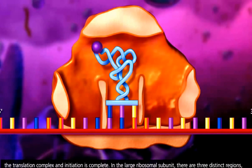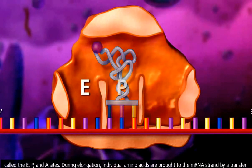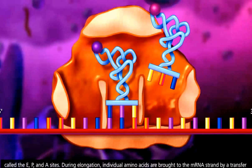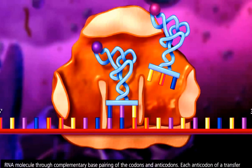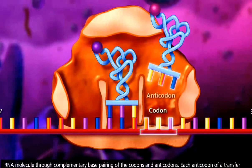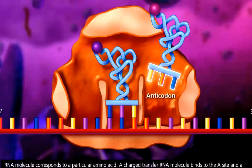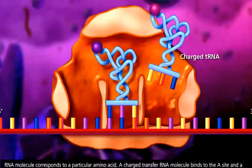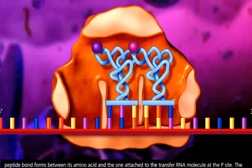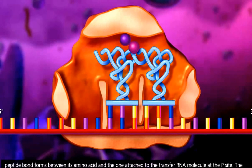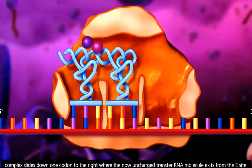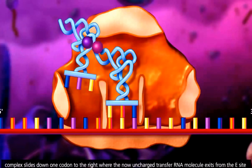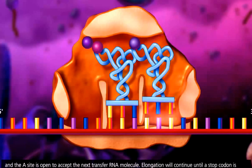In the large ribosomal subunit, there are three distinct regions called the E, P, and A sites. During elongation, individual amino acids are brought to the messenger RNA strand by a transfer RNA molecule through complementary base pairing of the codons and anticodons. Each anticodon of a transfer RNA molecule corresponds to a particular amino acid. A charged transfer RNA molecule binds to the A site and a peptide bond forms between its amino acid and the one attached to the transfer RNA molecule at the P site. The complex slides down one codon to the right where the now uncharged transfer RNA molecule exits from the E site and the A site is open to accept the next transfer RNA molecule.